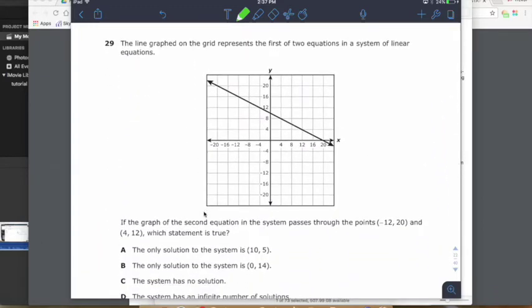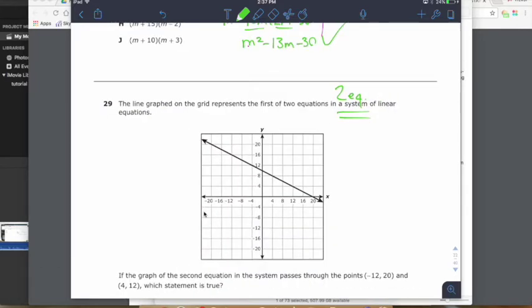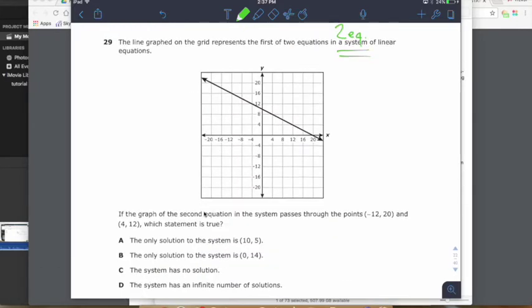Next one here, the line on the graph on the grid represents the first of two equations in a system of linear equations. What does the system mean? That means you have multiple equations. In this case, we have two equations. One of them's graphed. The other one is not. Now, they tell us here that the other one crosses through these two points. Negative 12, 20 and 4, 12. I'm going to try to be real precise with this while graphing this.